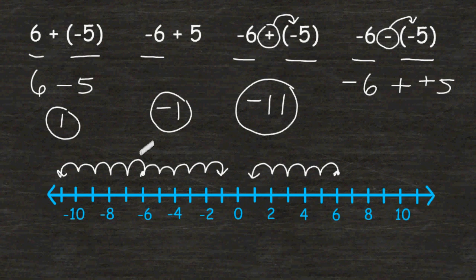So let's go to negative 6 and move to the right a distance of 5: 1, 2, 3, 4, and 5, which would place us at negative 1. So this fourth example ended up being just like the second example.